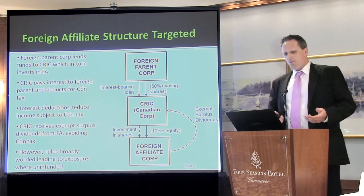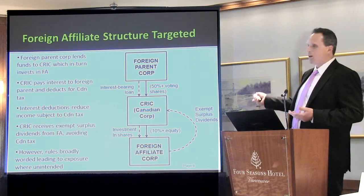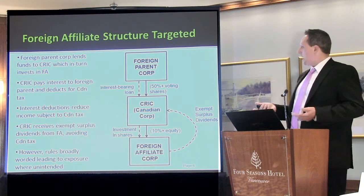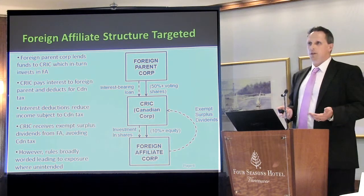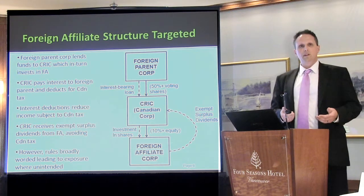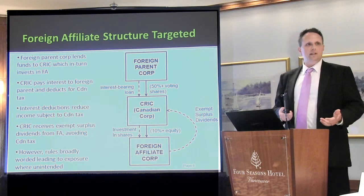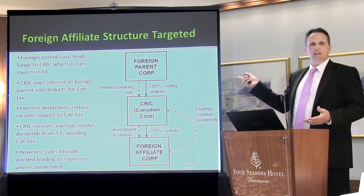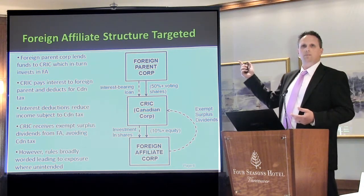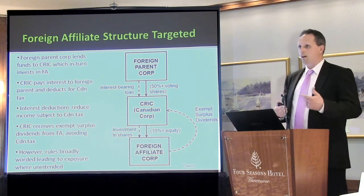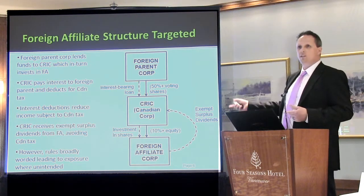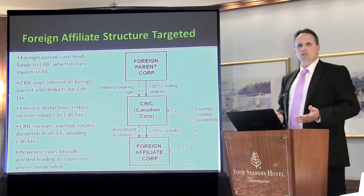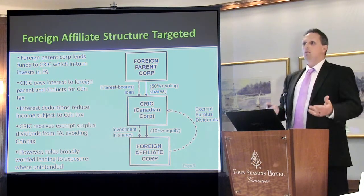Depending on the treaty country of the foreign parent, the withholding taxes on interest can be quite low, yet you get a full tax deduction in the Canadian corporation. Then, if the investment in the foreign affiliate is an active business, you can pay what's called an exempt surplus dividend from that foreign affiliate up to Canada. If Canada has a treaty with the country the foreign affiliate is in and that income was derived from an active business, you can effectively pay that up tax-free to Canada — earning income tax-free while taking a deduction on what's being paid up to the foreign parent.